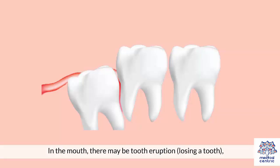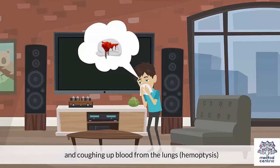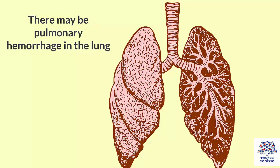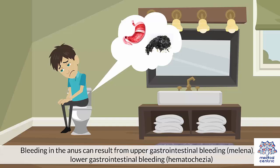In the mouth, there may be tooth eruption or losing a tooth, vomiting fresh blood — hematemesis — and coughing up blood from the lungs — hemoptysis. There may also be a pulmonary hemorrhage in the lung. In the urinary tract, there may be blood in the urine from urinary bleeding, also called hematuria. Bleeding in the anus can result from upper gastrointestinal bleeding, or melena, or lower gastrointestinal bleeding.